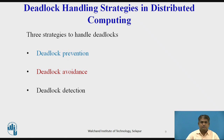Deadlock handling strategies in distributed computing. There are three strategies to handle deadlocks: deadlock prevention, deadlock avoidance, and deadlock detection. Deadlock handling is complicated to implement in distributed computing because no one site has accurate knowledge of the current state of the system, and because every inter-site communication involves a finite and unpredictable delay.